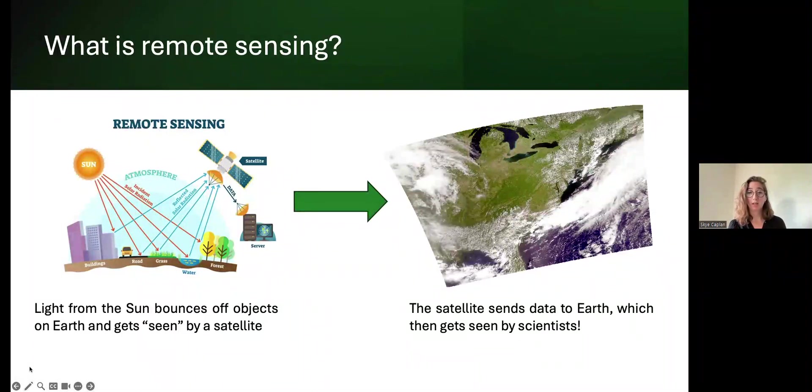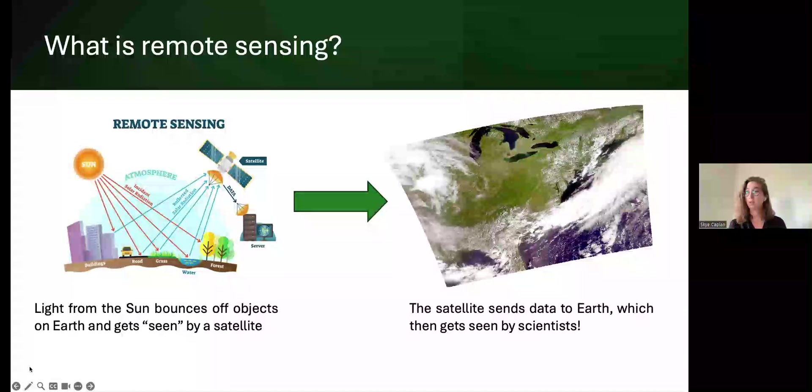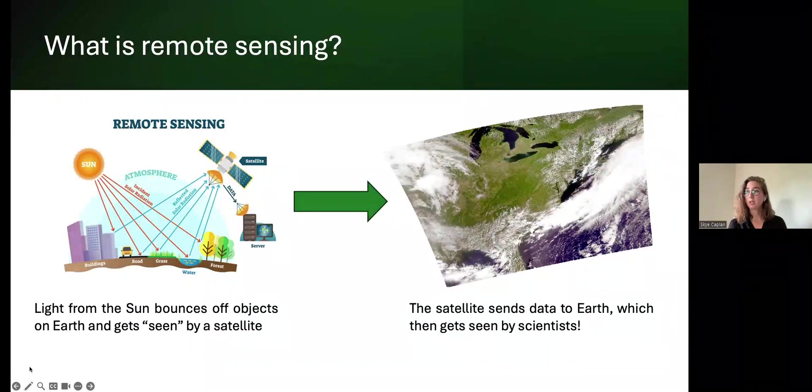As the Earth gets hit by all that good sunlight that we know and love, some of that light bounces off different surfaces on the ground and right back out into space where the satellite sees it. You can kind of think of it like a camera in space. We then get those pictures back from the satellite and can dig into them to do some fun science. This diagram here is showing the incident solar radiation coming in from the sun, bouncing off the buildings, the roads, the grass, the water, the trees, and back up into the satellite.